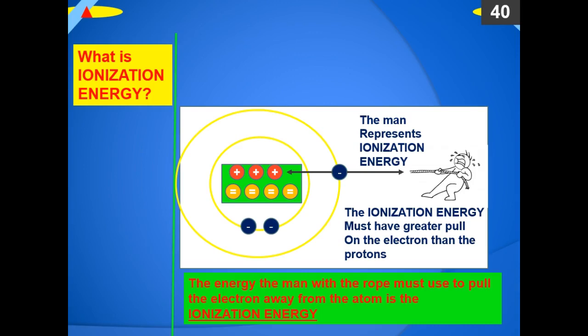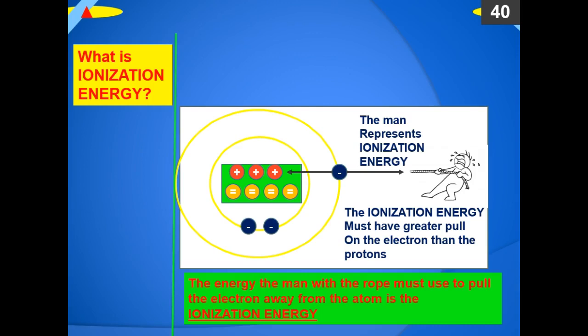We're going to learn which elements have high ionization energies — that is, it takes a lot of energy to pull the electrons away — and which ones have low ionization energy. This is an important factor in chemical bonding. If you imagine a little man with a rope pulling on the electron, the energy that the man with the rope must use to pull the electron away from the atom is the ionization energy.